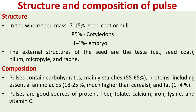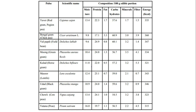Composition: pulses contain carbohydrates, mainly starches, at 55 to 65 percent; proteins including essential amino acids at 18 to 25 percent, which is much higher than cereals; and fat content at 1 to 4 percent. Pulses are also good sources of protein, fiber, folate, calcium, iron, lysine, and vitamin C. This chart shows different types of pulses, their scientific names, and composition per 100 gram edible portion.